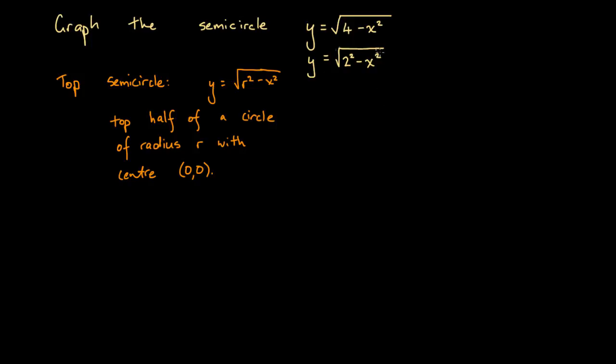Well, now that we have this form that looks very much like this orange form here, we could say that y equals square root of 2 squared minus x squared. This is the top half of a circle,